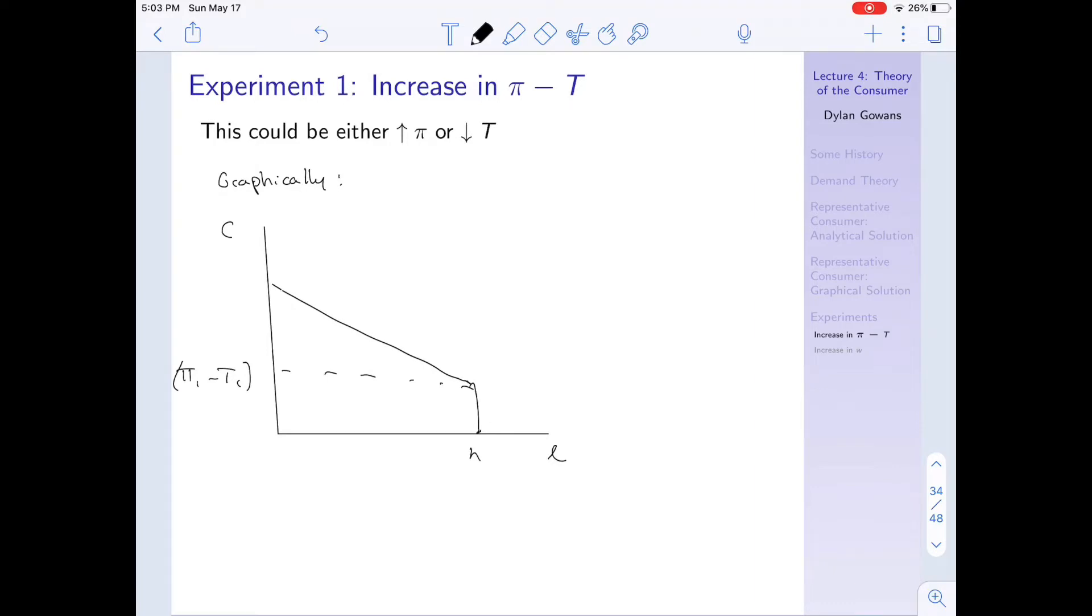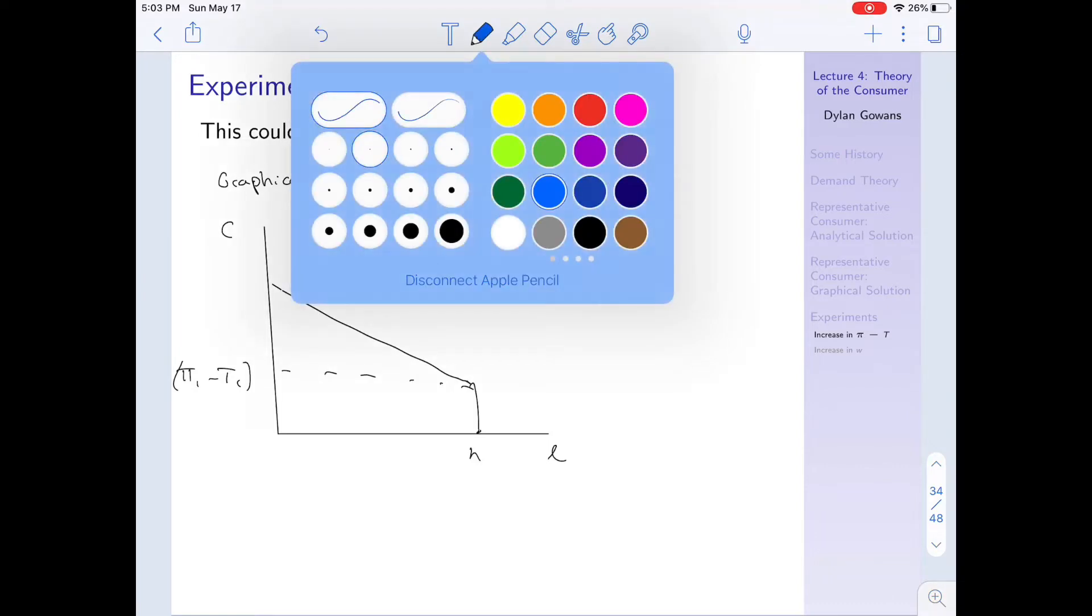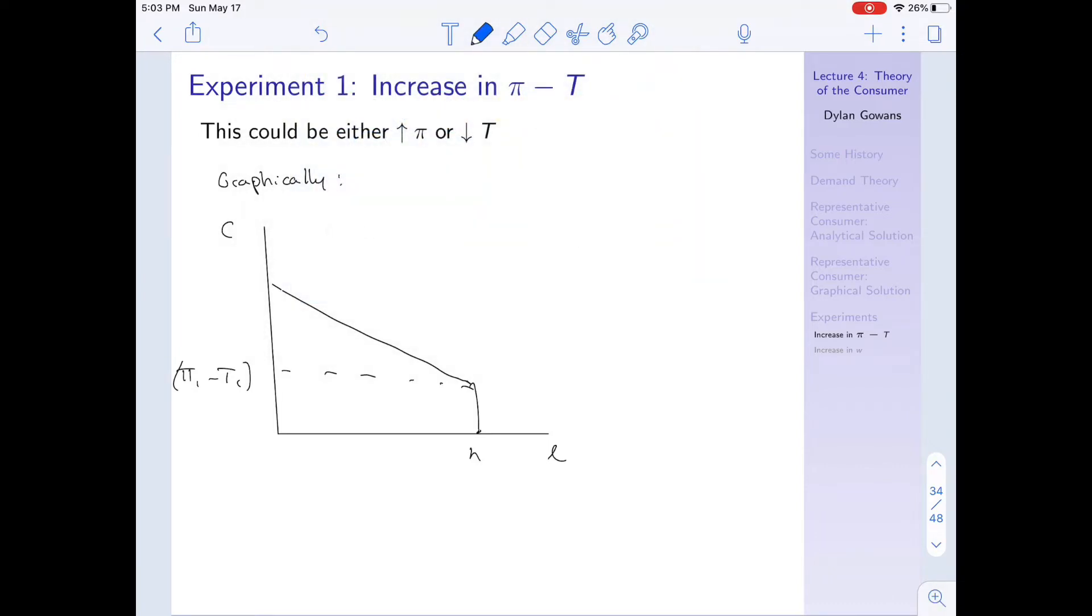But in either case, now imagine we do have a change. So let's say π increases or t decreases. That's going to change the budget line in the following way. Now, if I consume all of my hours in leisure, now I'm making a higher non-wage income, either because my taxes are lower or I'm making more profits. Meanwhile, the slope will remain the same, right? As I work, I still make w income per hour. So the slope of the budget line remains the same.